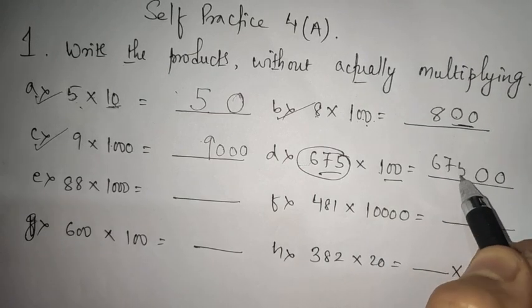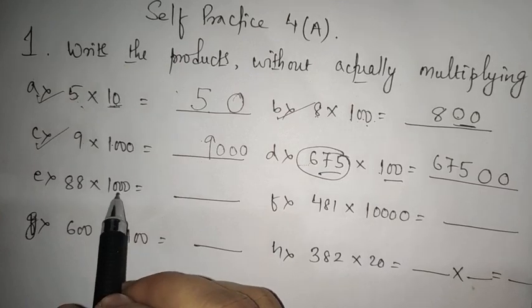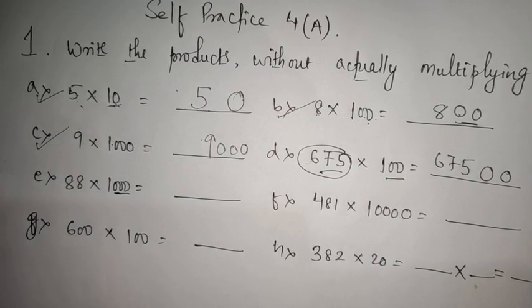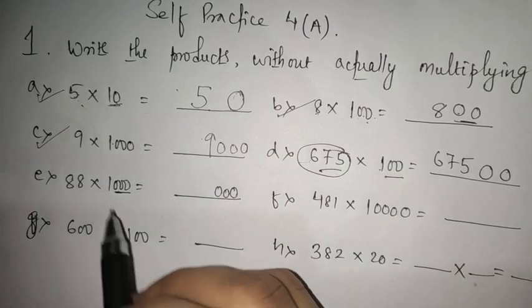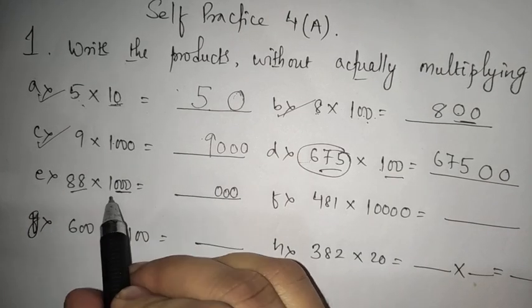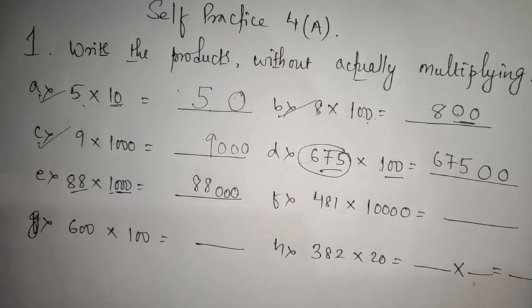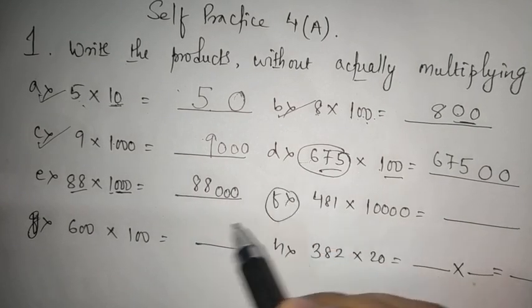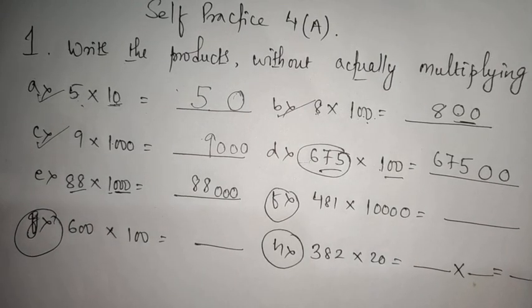Similarly here, you are multiplying with 1000. Write three zeros on the right hand side, then multiply with 88. 1 × 88 is 88. This will be your product. Number F, number G, and number H you will try to do yourself.